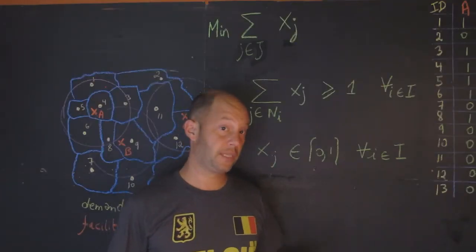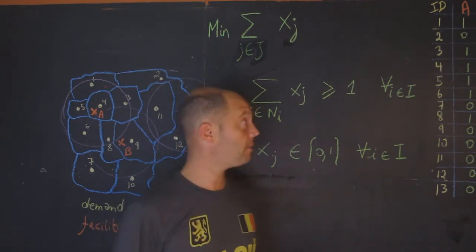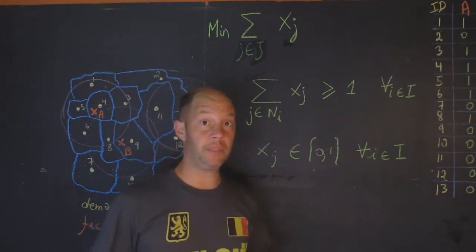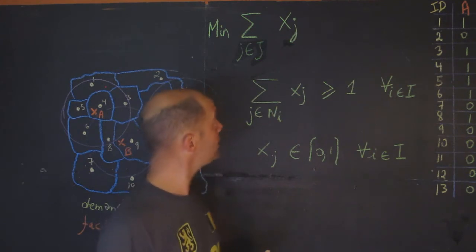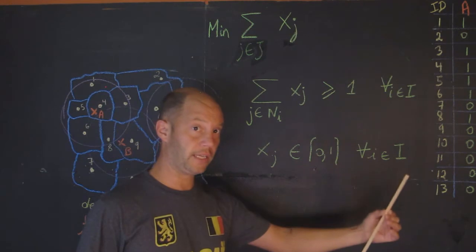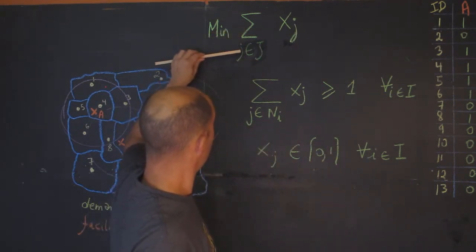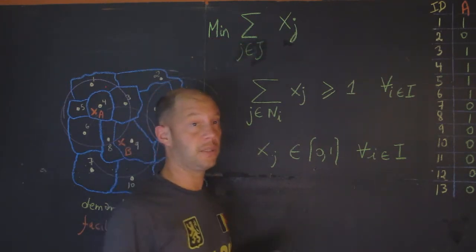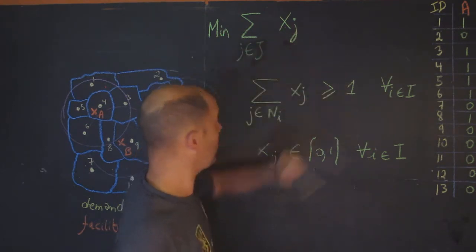Now we're going to see how we formulate this problem in generic mathematical terms. The objective function is a minimization. We try to minimize the number of facilities. x_j, as I mentioned, is a decision variable equal to one if we locate at j, zero otherwise. We sum this up for j belongs to J, where capital J is the set of all facilities. In this example, there are only three, so that would be x_1 plus x_2 plus x_3.